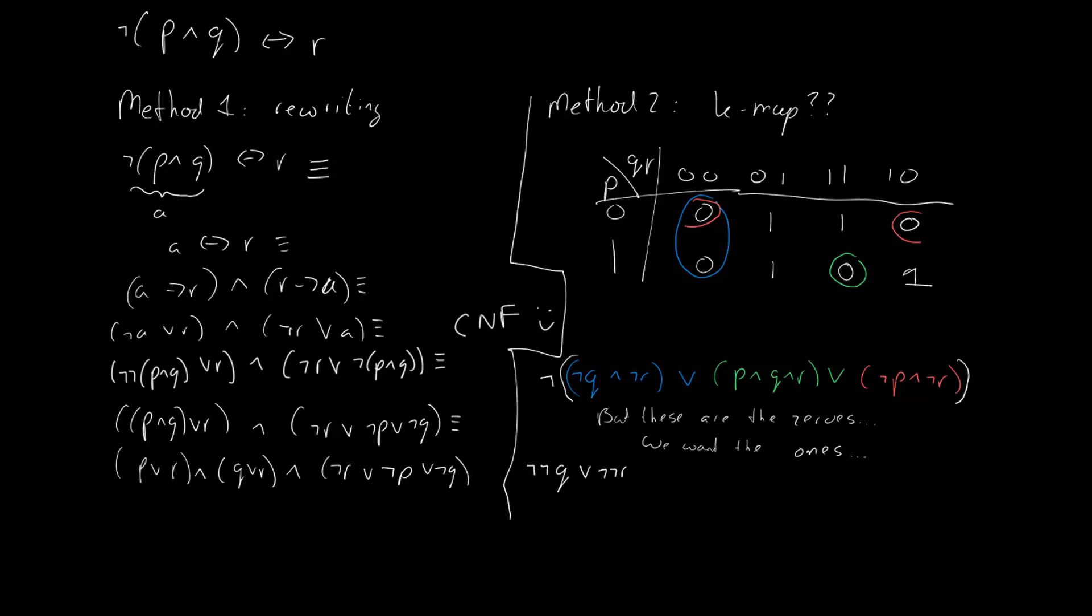And look at that. What happens when we take the negation of a sum of products? The negation of a DNF? Well, all we have to do is apply De Morgan, and we get a CNF.